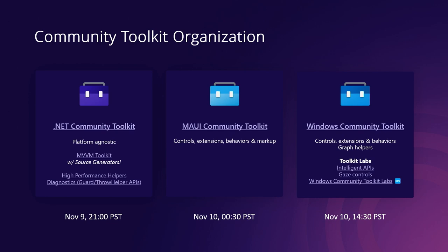I work on the Windows Community Toolkit, which is for UWP and WinUI 3 developers. We have a bunch of controls and helpers for Windows development. We've been doing a lot of new work in something we just released called Windows Community Toolkit Labs — those are the components I'm showing you today. Our goal is to create components that work across the migration from UWP to WinUI 3, and also support platforms like Uno Platform for WebAssembly and other targets.